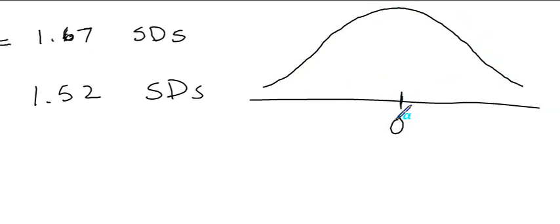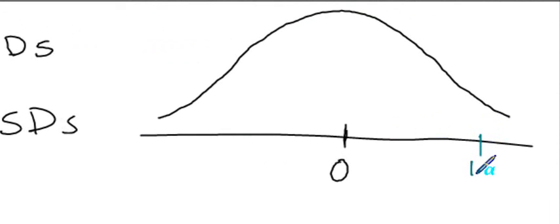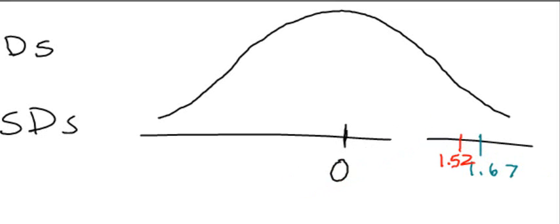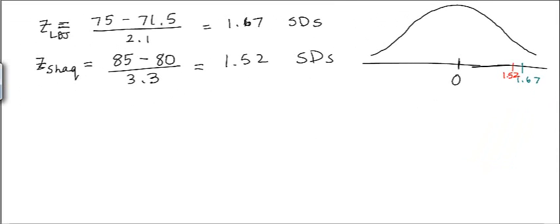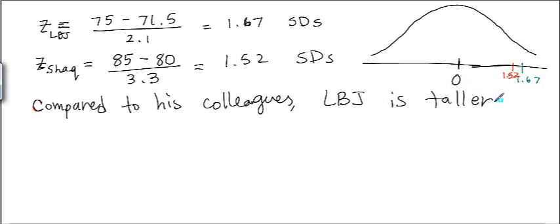On the standard normal distribution — mean of 0 — LBJ is at 1.67 and Shaquille O'Neal is at 1.52. So you can see who is relatively taller: President Johnson is relatively taller. Compared to his colleagues, LBJ is taller, meaning LBJ is a taller president than Shaquille O'Neal is as a basketball player.